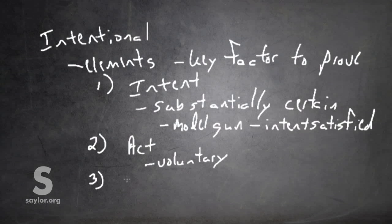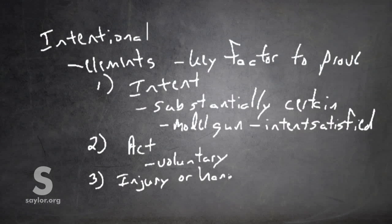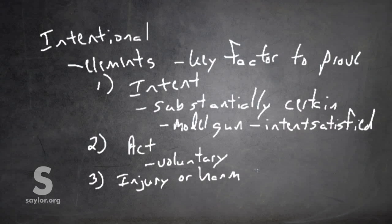Third, you have to have injury or harm. Which is pretty much self-explanatory. That can be very minimal, as in an assault, where the plaintiff suffers merely an apprehension of imminent harmful or offensive contact.